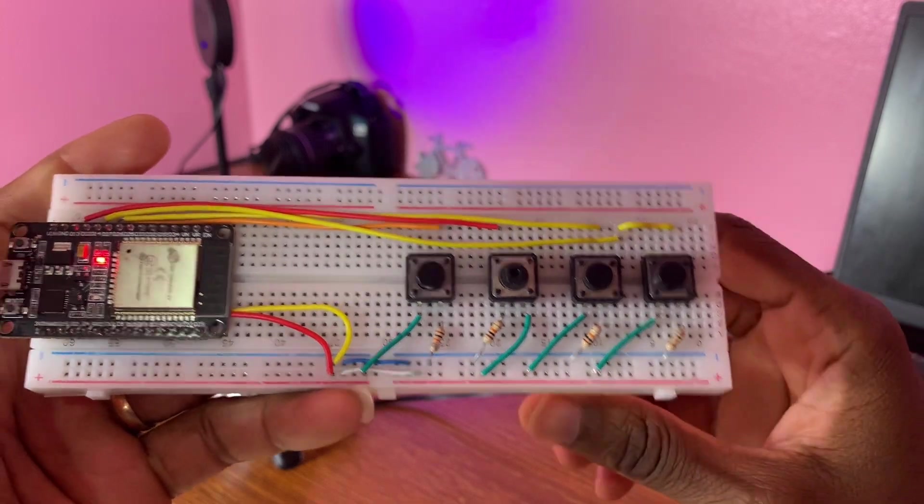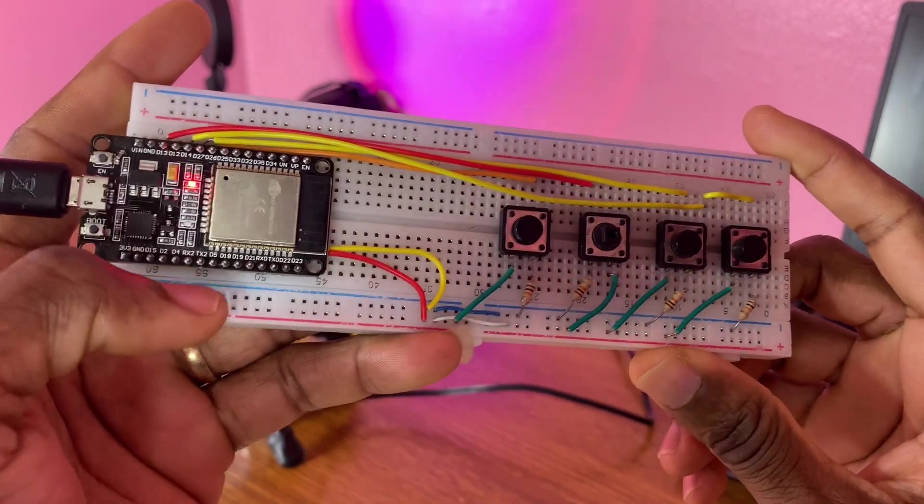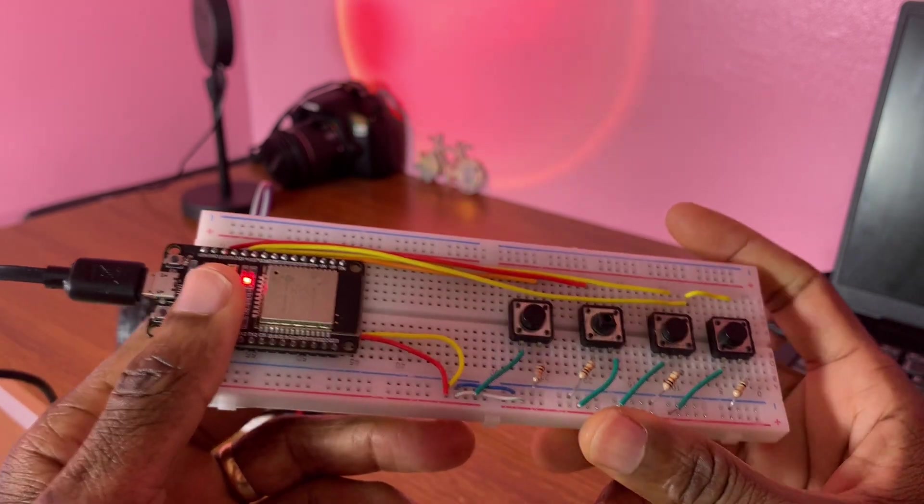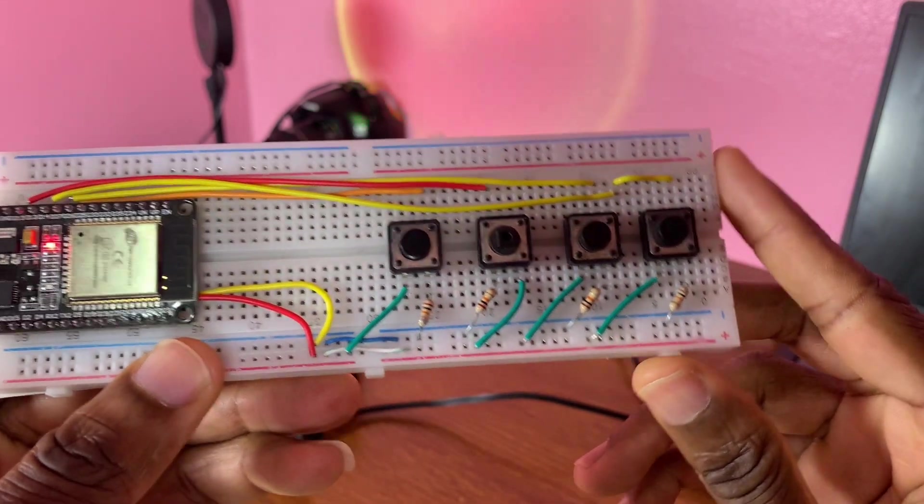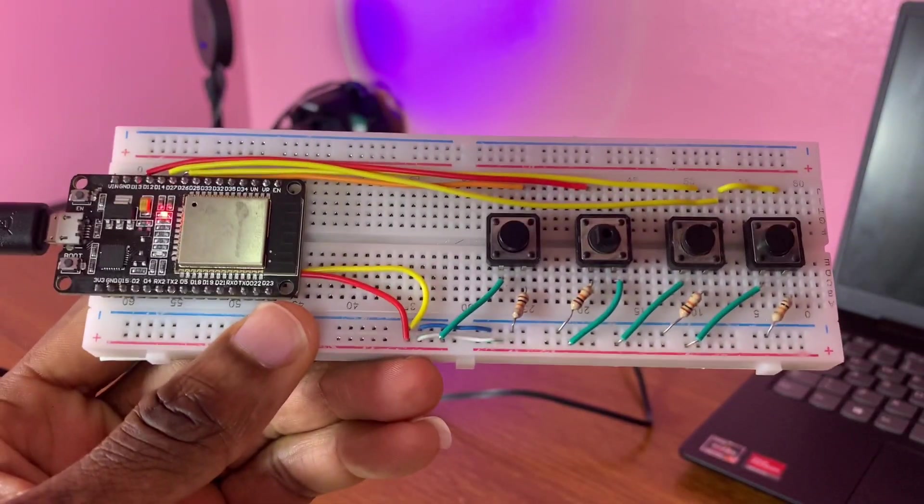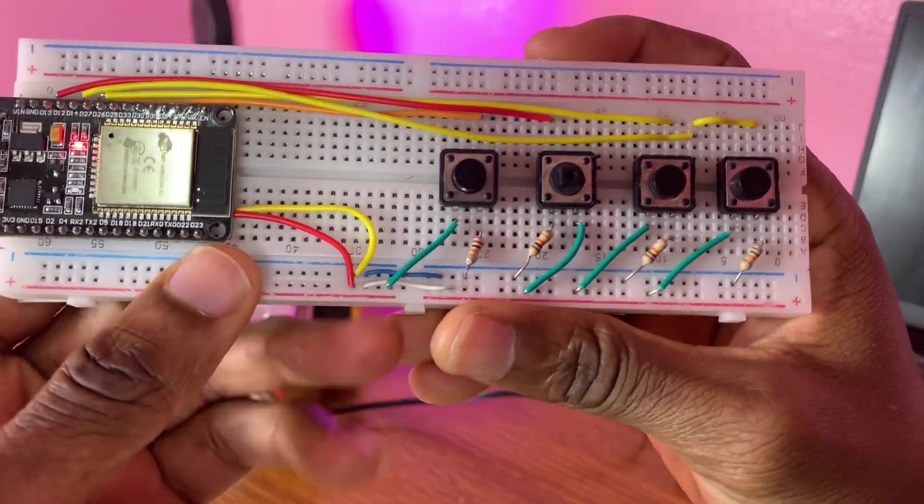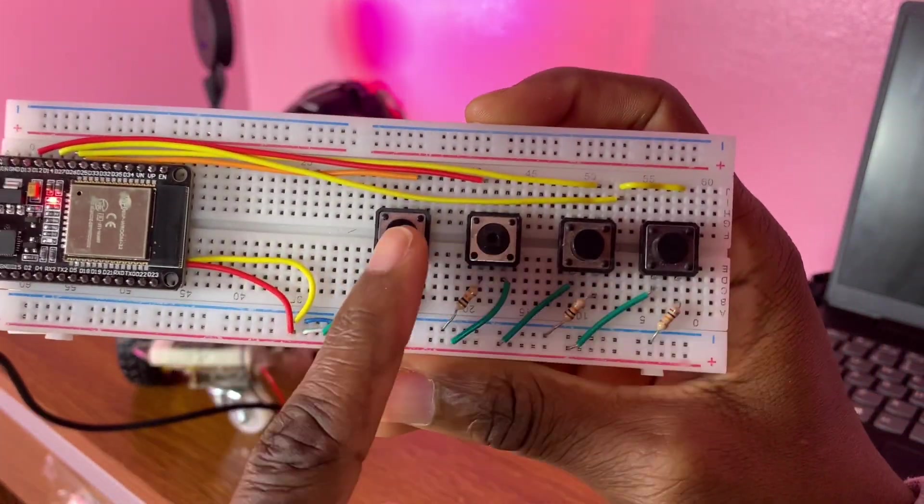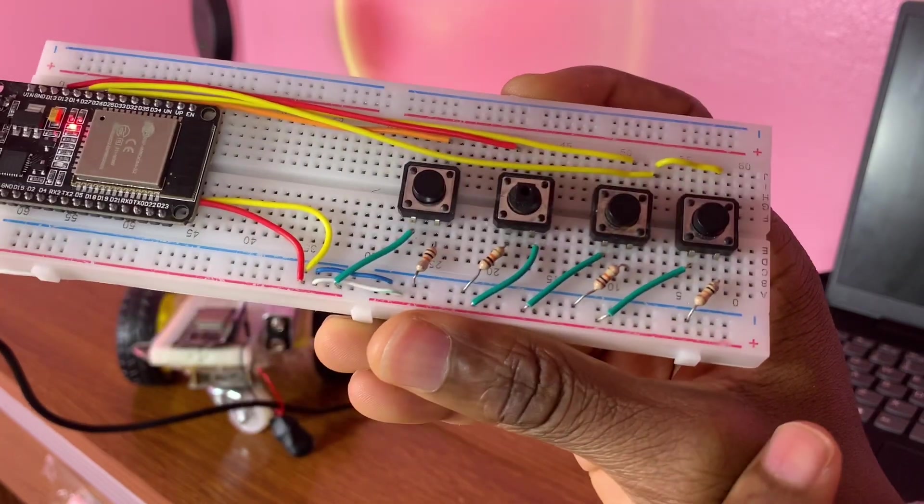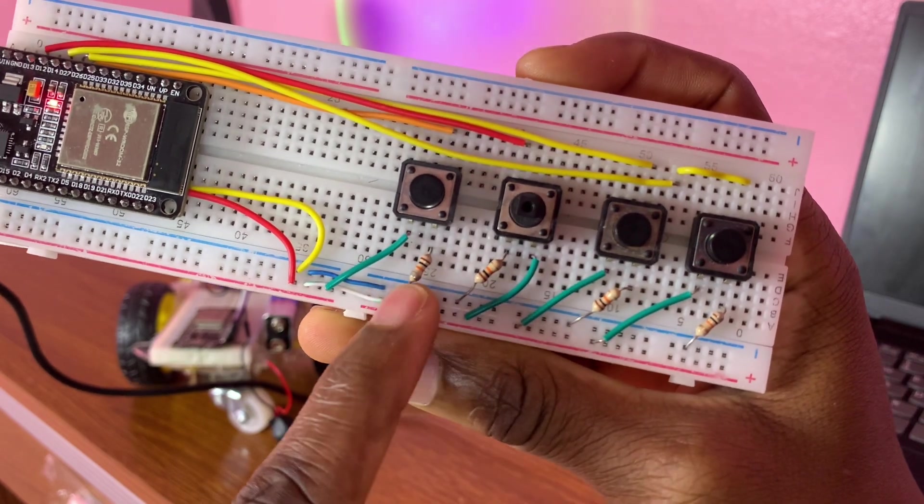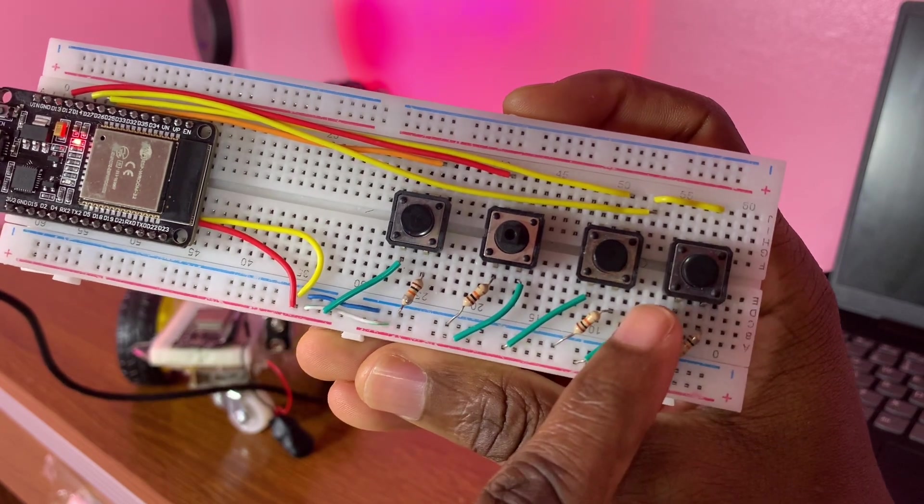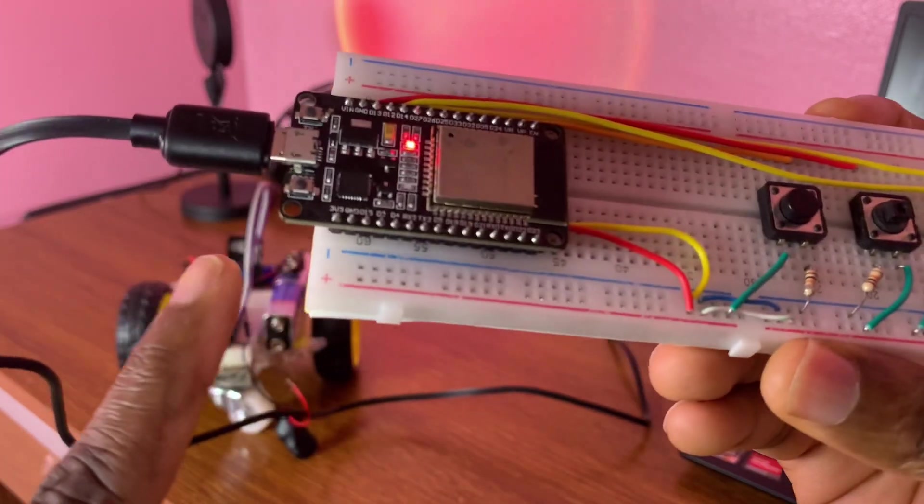So here with the transmitter, because I'm controlling the robot using four push buttons. So here with four of these things, with a pull-down resistor, ground here, and the wires to 3.5 volts.